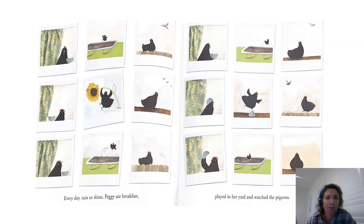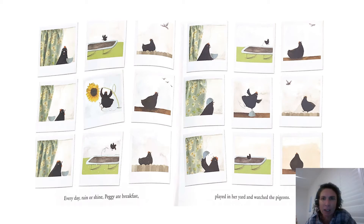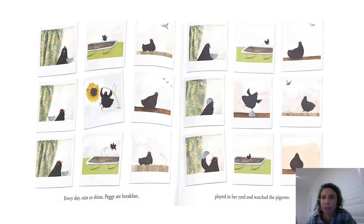Every day, rain or shine, Peggy ate breakfast, played in her yard and watched the pigeons. She loved to do it. You can see her bouncing around on the trampoline looking up at the pigeons in the sky. You can see her looking through the window of their chicken coop — you can see the curtains — and we come back to those curtains a little bit later in the story when we move to the city.